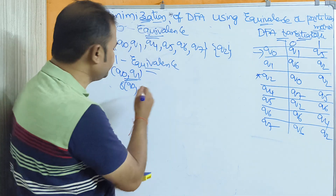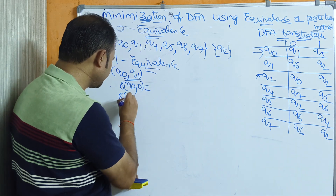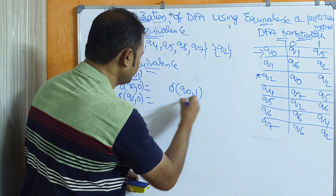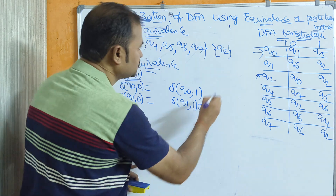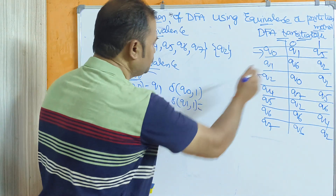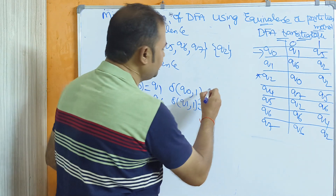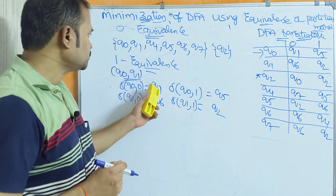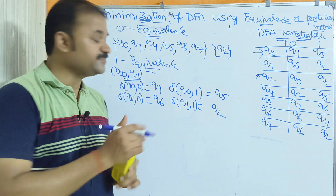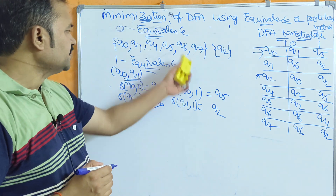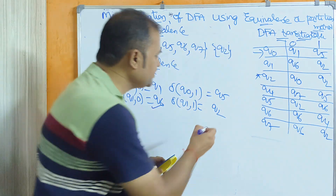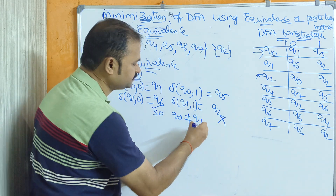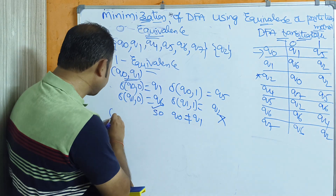Next we construct the one-equivalence. First compare Q0 and Q1: delta(Q0, 0) = Q1, delta(Q1, 0) = Q6; delta(Q0, 1) = Q5, delta(Q1, 1) = Q2. Q1 and Q6 are in the same set, but Q5 is in one set whereas Q2 is in another set. So Q0 is not equal to Q1.